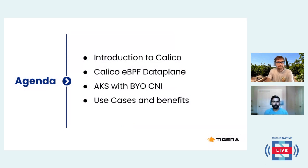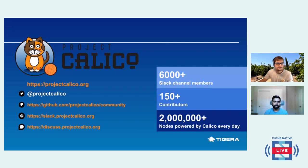Before I start, I just wanted to talk about Project Calico a little bit. It's an active community for cloud networking and security. If you're not familiar with Calico, it's an open-source CNI that's available to use on communities and other cloud-native platforms. There are links to different projects here — Project Calico, the GitHub link, and links for the Slack channels. There are about 6,000 active members in our Slack channel, and we have an active community of around 150 contributors.